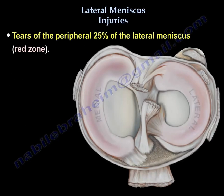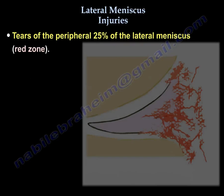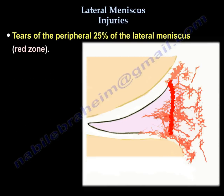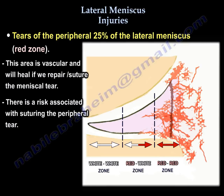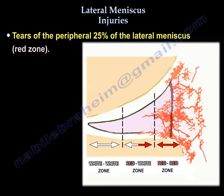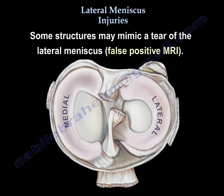Repairs of the peripheral 25% of the lateral meniscus are in the red zone, meaning this area is vascular and it heals if we suture and repair the meniscus, but there is a risk of suturing it. The success rate associated with lateral meniscus repair increases with simultaneous ACL reconstruction.